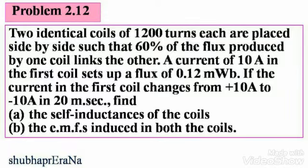Problem 2.12. Two identical coils of 1200 turns each are placed side by side such that 60% of the flux produced by one coil links the other. A current of 10 Amperes in the first coil sets up a flux of 0.12 milliWebers. If the current in the first coil changes from +10 Amperes to −10 Amperes in 20 milliseconds, find: (a) the self-inductances of the coils and (b) the EMFs induced in both the coils.